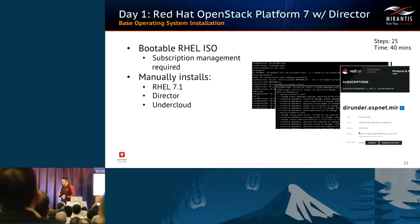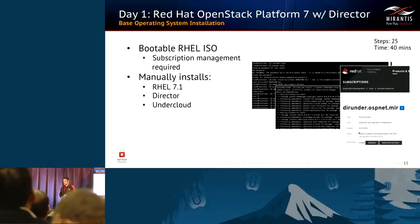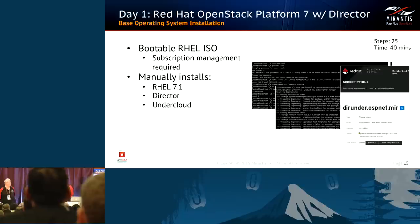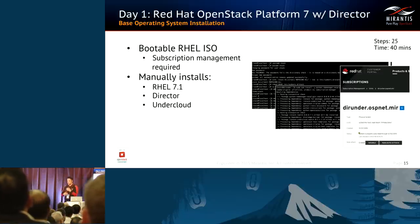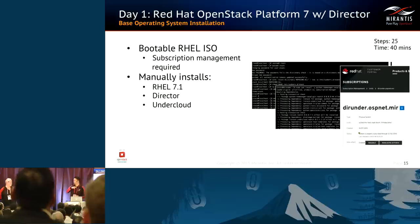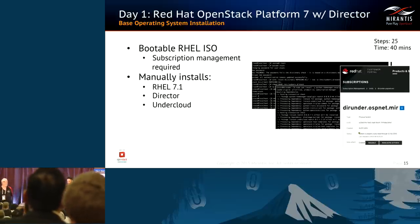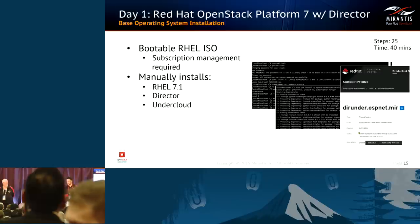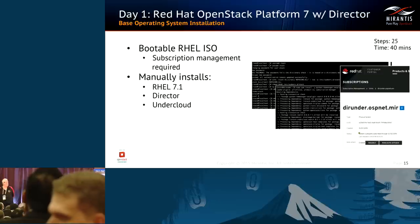An interesting issue arose early on in the first release back in August. When working with the base OS repos and adding OpenStack Platform-specific repos, after installing Director, running another update caused the RHEL base OS dependencies to overwrite OpenStack dependencies, causing problems down the road. Red Hat subsequently corrected the documentation by adding commands to disable the RHEL base OS repos and assign priorities specifically to the OpenStack ones, but this caused significant troubleshooting time.